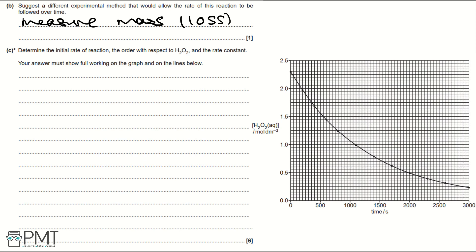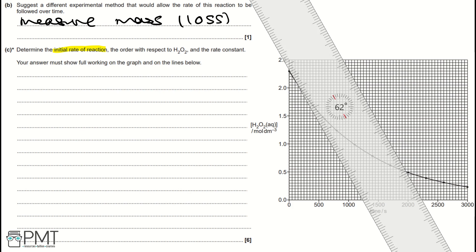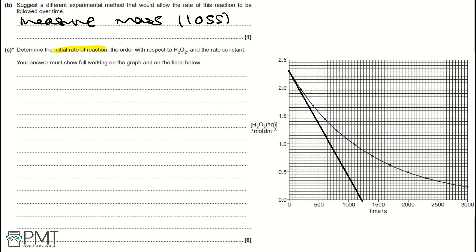Part C: Determine the initial rate of reaction, the order with respect to H₂O₂, and the rate constant. Your answer must show full working on the graph and on the lines below. To find the initial rate of reaction, we draw a tangent and work out the gradient of that tangent at T = 0. With a ruler lined up at T = 0, we cross one point to get the tangent to the graph as shown.